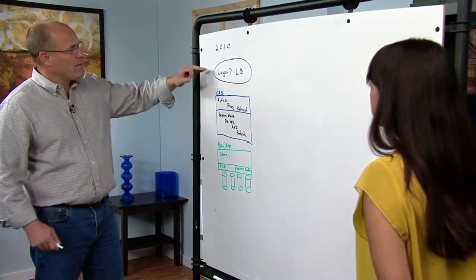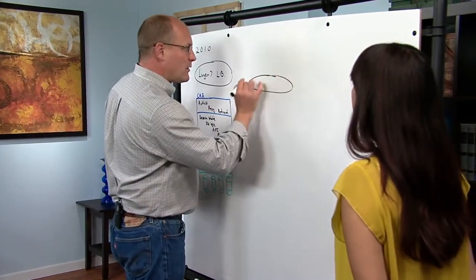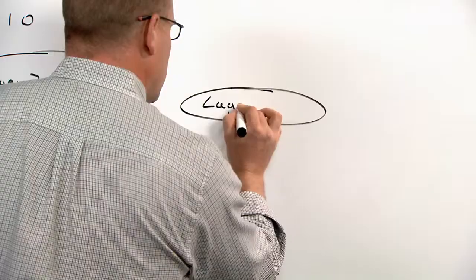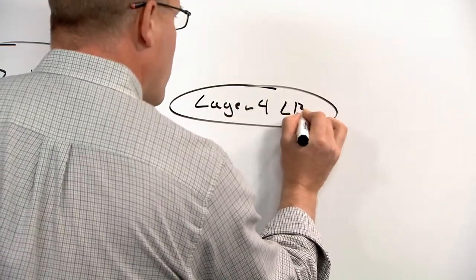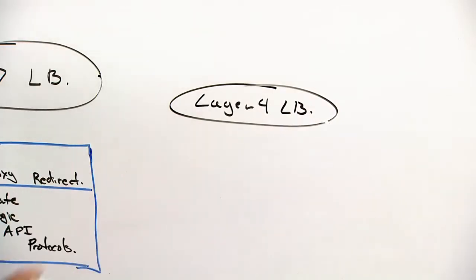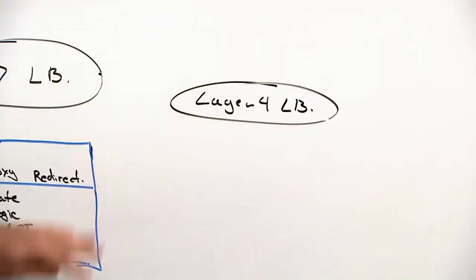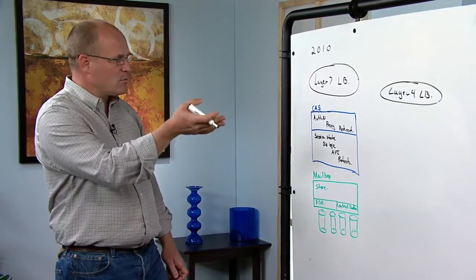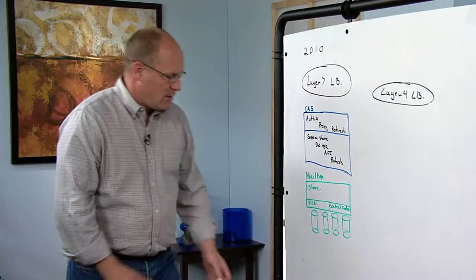So that was one of the key things we really wanted to address in this release, is to replace that layer seven load balancer with a layer four load balancer. And that just means that we're going from session affinity to TCP affinity. And it only needs to worry about getting an individual request to one of the CAS servers that are in the array.